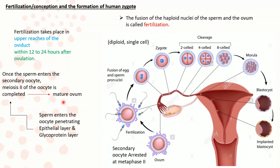Both the mature ovum and the sperm contain a set of haploid pronuclei each. A haploid pronucleus is a pronucleus which contains one set of unpaired chromosomes. Subsequently, the two haploid pronuclei of the mature ovum and the sperm fuse to form a diploid single cell known as the zygote. The fusion of the haploid nuclei of the sperm and the mature ovum is called fertilization. Fertilization takes place in the upper reaches of the oviduct within 12 to 24 hours after ovulation.